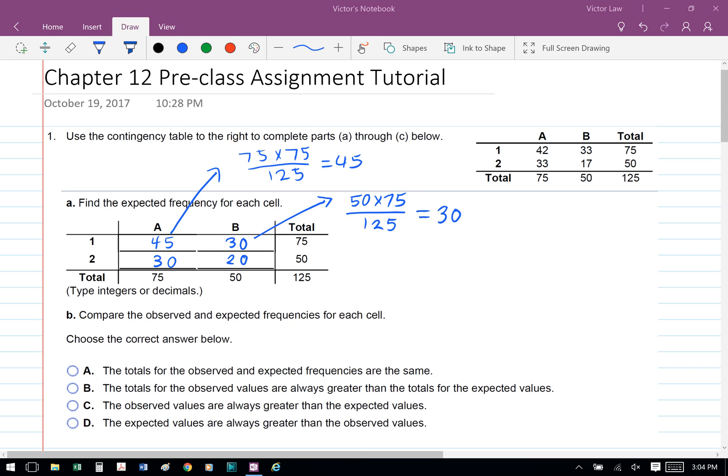For cell B1, we're going to take the row 1 total again, which is 75, and then take the column B total, which is 50. We times them together and divide it by the total of 125, and we get 30. And basically we do it for all the cells.